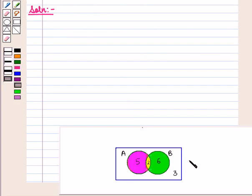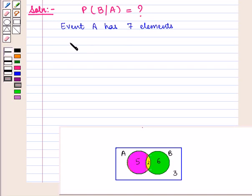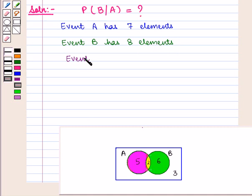We are given a Venn diagram showing two events A and B, and we have to find conditional probability of occurrence of event B given event A. Studying this Venn diagram: event A has 5 plus 2, that is 7 elements, and event B has 2 plus 6, that is 8 elements. Also, event A intersection B has 2 elements.